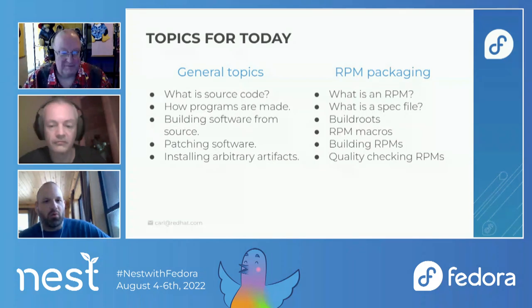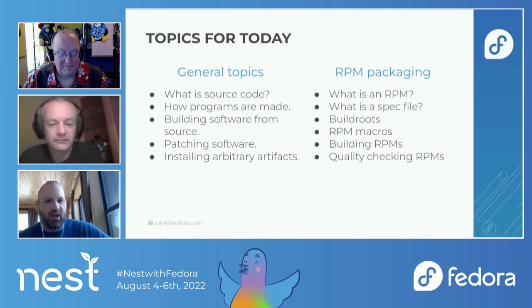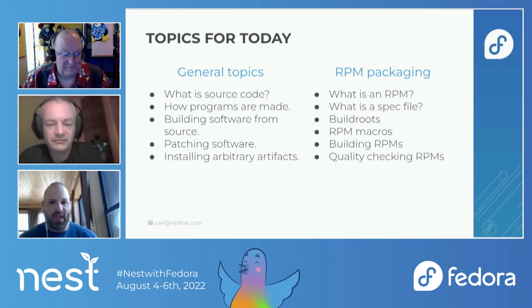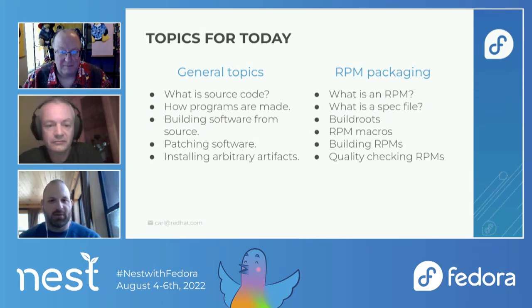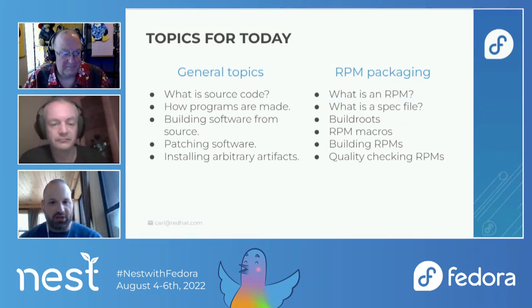Our topics for today: we're going to have a few general topics, then dive into RPM packaging specific stuff. For the general topics, we'll talk about what is source code, how programs are made, building software from source, patching software, and installing arbitrary artifacts. Then on the packaging side, we'll cover what is an RPM, what is a spec file, build roots, RPM macros, the actual building of RPMs, and quality checking them.